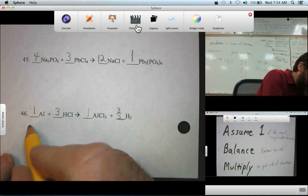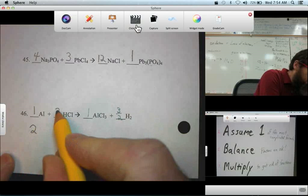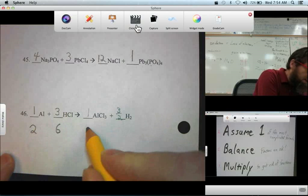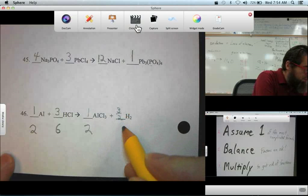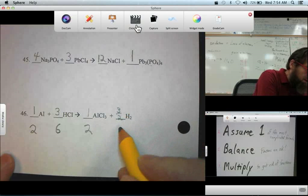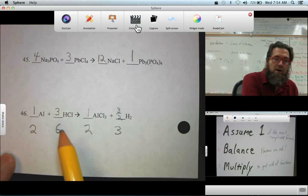One times two is two. Three times two is six. One times two is two. And three halves times two, the twos cancel, we get three. And there are our coefficients: two, six, two, three for the balanced equation.